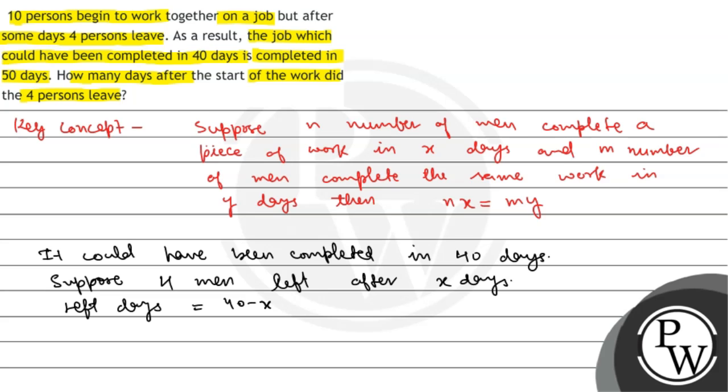40 minus x if they do not left, and 50 minus x if they left. That means we can write, therefore...